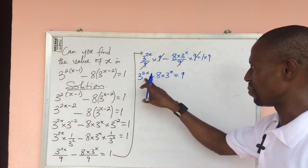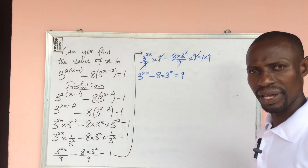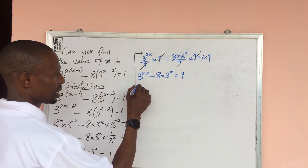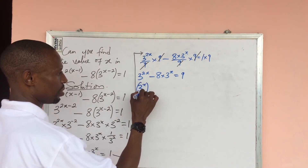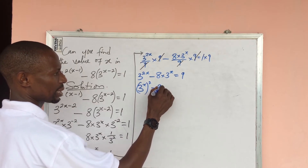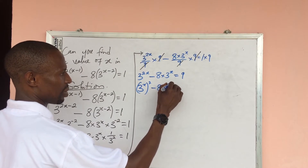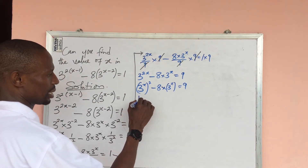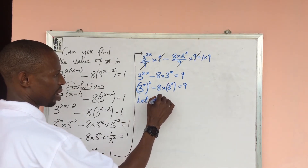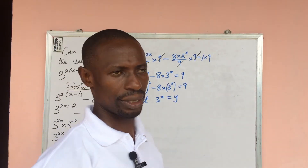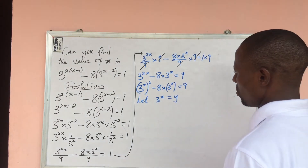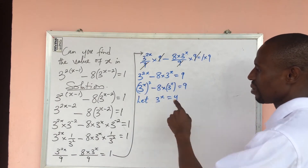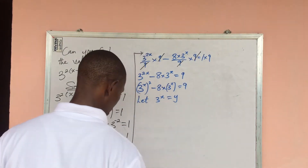We can rewrite 3 to the power of 2x as (3 to the power of x) all squared. So the equation becomes: (3^x)² minus 8 times (3^x) equal to 9. Now let's substitute: let 3 to the power of x equal to y. Wherever we see 3 to the power of x, we replace it with y.